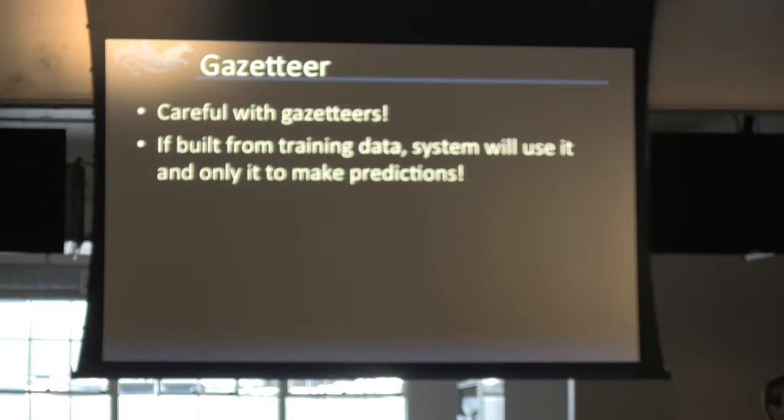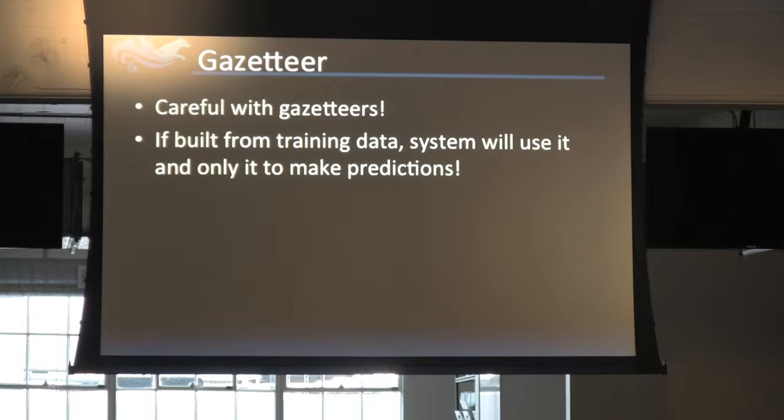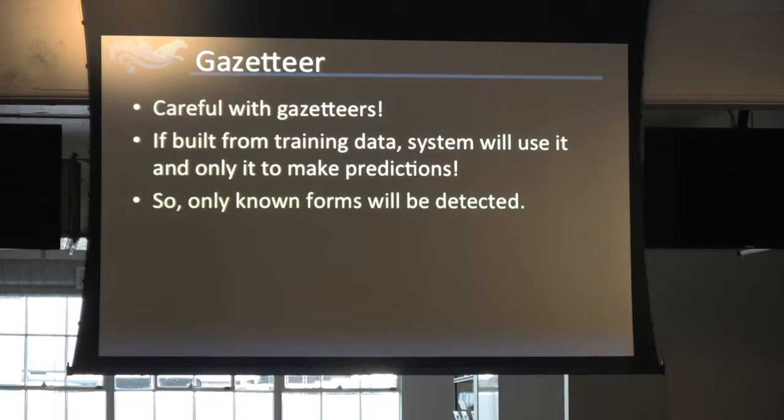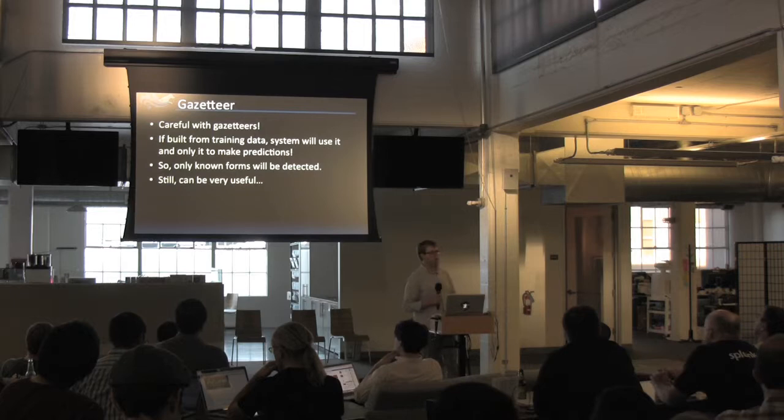There are some dangers if you use gazetteers. The biggest one is that if you build your gazetteer from the training data, the system will decide the gazetteer is really good and everything else is a little bit noisy, so it'll only use the gazetteer to make predictions. If you encounter new examples not from your training data — an entity you've never seen before — it'll say it's not in the gazetteer, so we're not going to guess it. Nevertheless, if you're careful and extract them from other data sources like Wikipedia, they can be very useful.